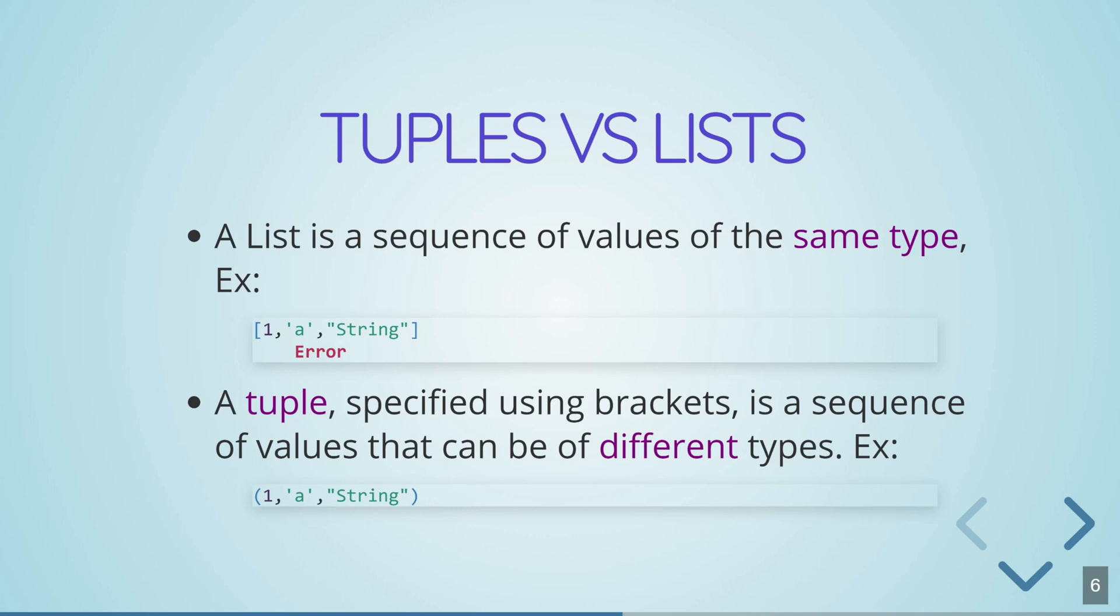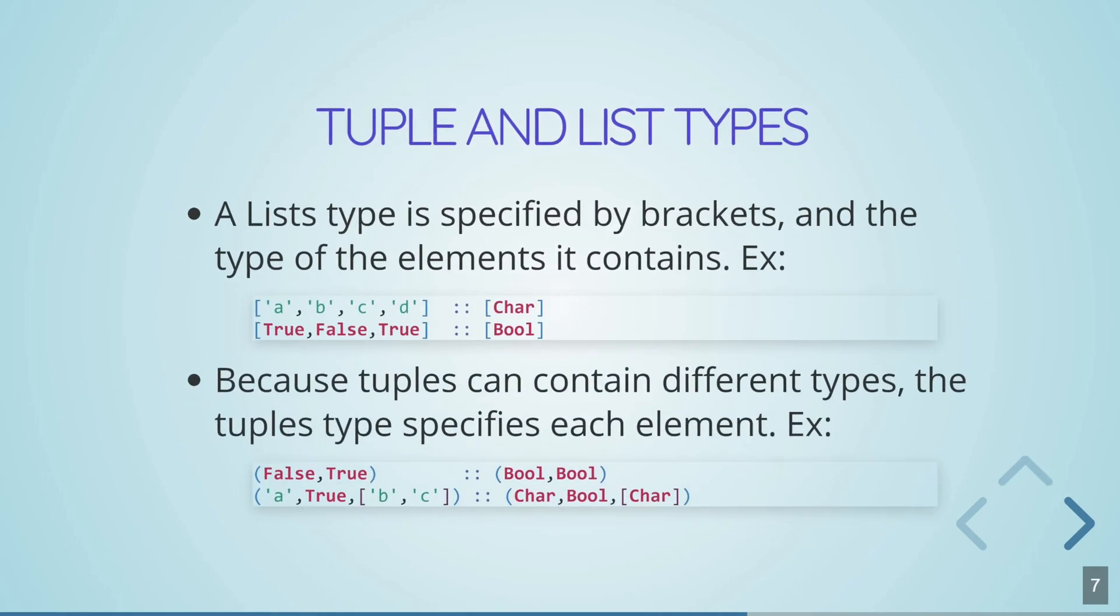If we need to group together a bunch of values that have different types, we use a different data structure called a tuple. So a tuple is specified using round brackets, and a list is specified using square brackets. So a tuple can contain a bunch of different types. So that example that we just did, that's fine inside of a tuple.